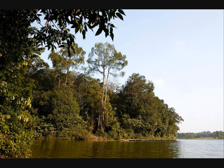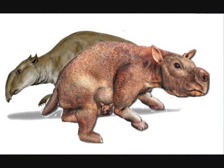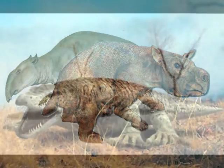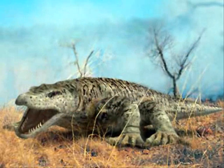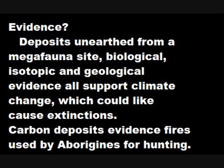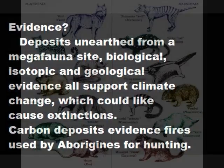Fossil records suggest that megafauna were constrained by the area their food grew in, around the shrinking inland lakes or moist areas close to the East Australian seaboard. Increased competition between megafauna in these smaller areas, combined with human predation, resulted in the death of large mammalian fauna. This affected their predators, resulting in a trophic collapse and further extinctions. Deposits unearthed from megafauna sites at Lancefield Swamp, Victoria, provide evidence in support of climate change, along with biological, isotopic, and geological evidence of cyclic Quaternary temperature and precipitation changes, accurately dated. Carbon deposits evidence the frequent fires used long ago by humans for hunting.